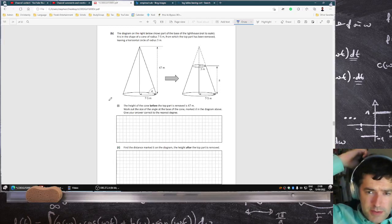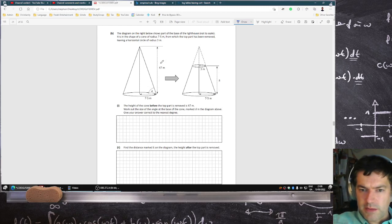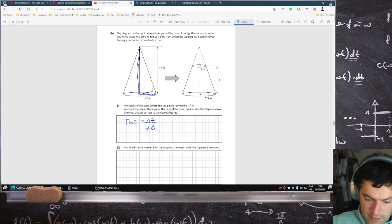The diagram on the right below shows part of the base of the lighthouse, not to scale. It's in the shape of a cone, radius 7.5. Top part's being removed. The height of the cone before the top part is 47. Work out the size of the angle at the base a. This is the formula that says tan a is the opposite over the adjacent, which is 47 over 7.5 to the nearest degree. So tan inverse 47 over 7.5 to the nearest degree is 81 degrees.